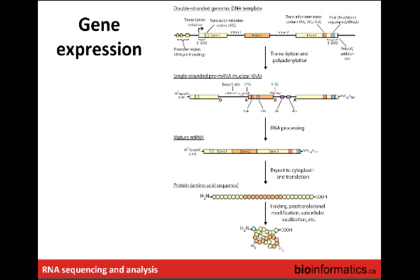Just like it would be nice to sequence full-length protein sequences directly, it would be nice to just sequence entire full-length RNA species. Unfortunately, RNA-seq isn't really directly sequencing these things. First, it's not sequencing RNA — the RNA is being converted to cDNA, and then we're sequencing cDNA. There's almost always a fragmentation step where a transcript that may be 1 kb, 5 kb, or 10 kb or longer is being fragmented into small pieces in the range of 250 to 400 bases.